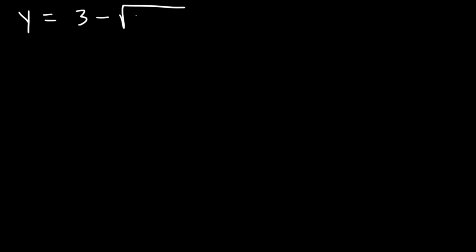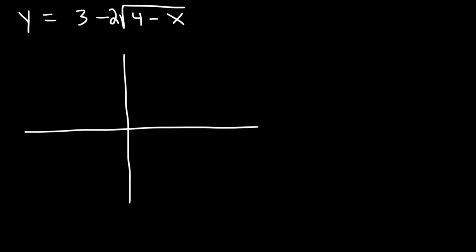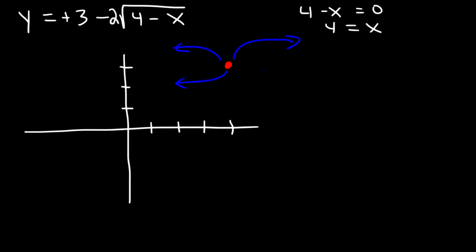Let's graph y equals 3 minus 2 times the square root of 4 minus x. Setting 4 minus x equal to 0 gives x equals 4, so the origin shifts 4 units to the right. The plus 3 shifts it up 3 units — so the graph starts at 4 comma 3. There's a negative sign in front of x and a negative sign in front of the radical, so the graph goes towards quadrant 3.